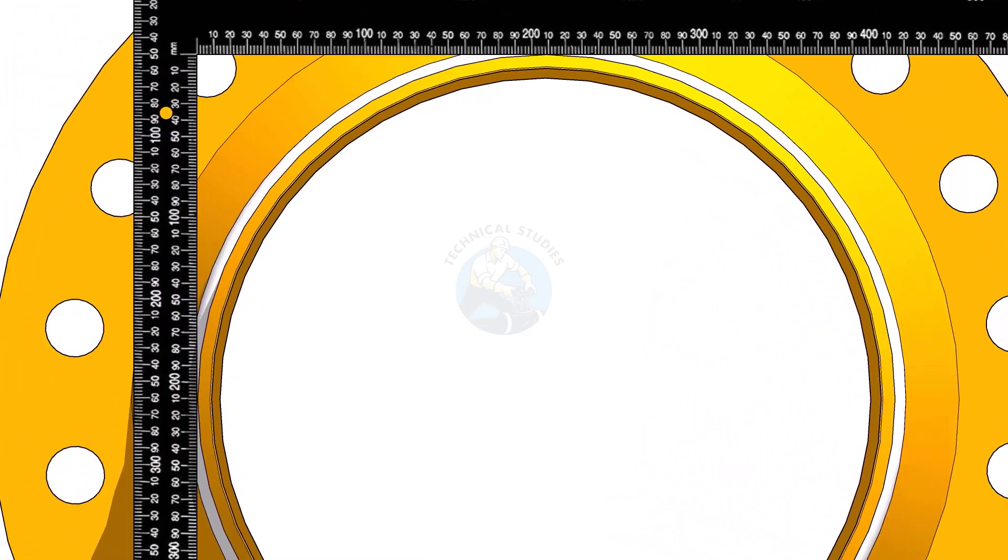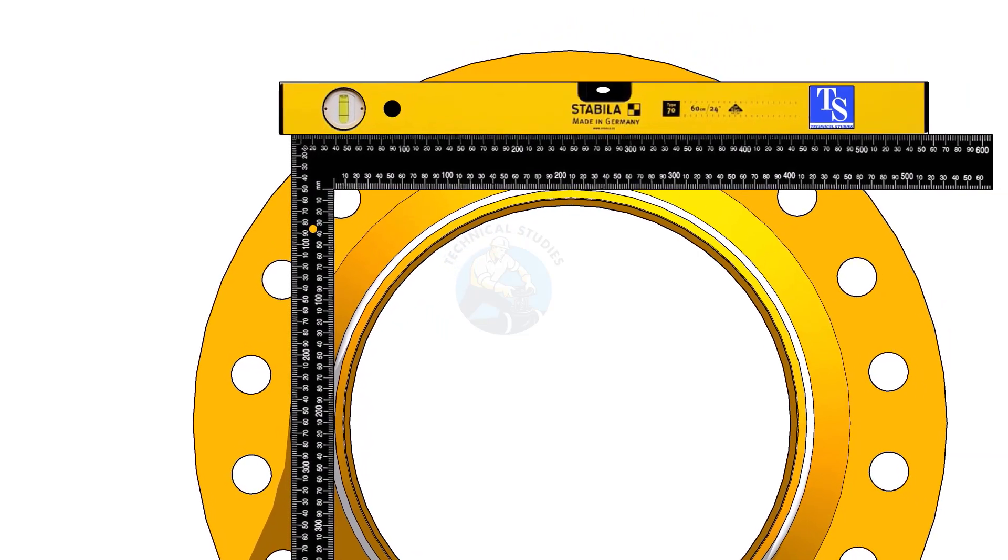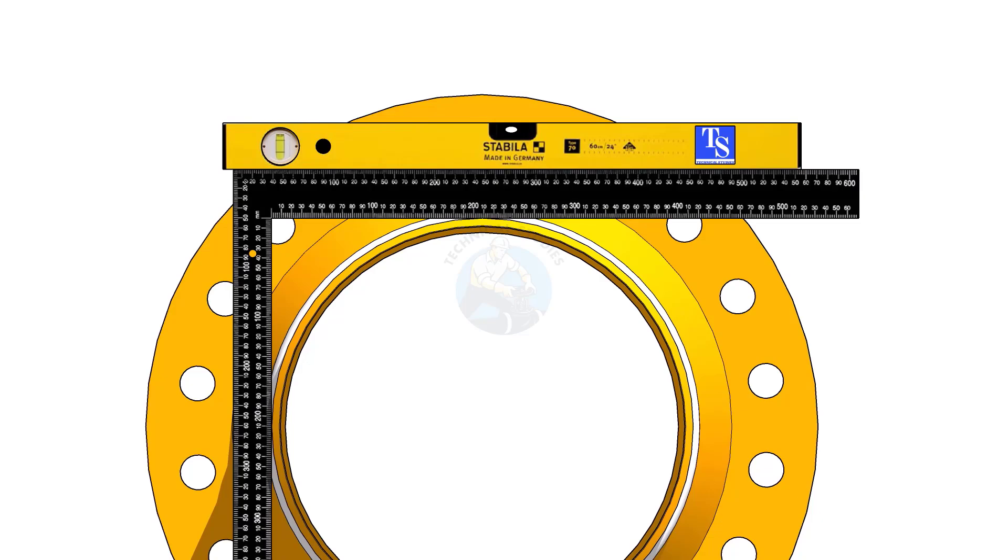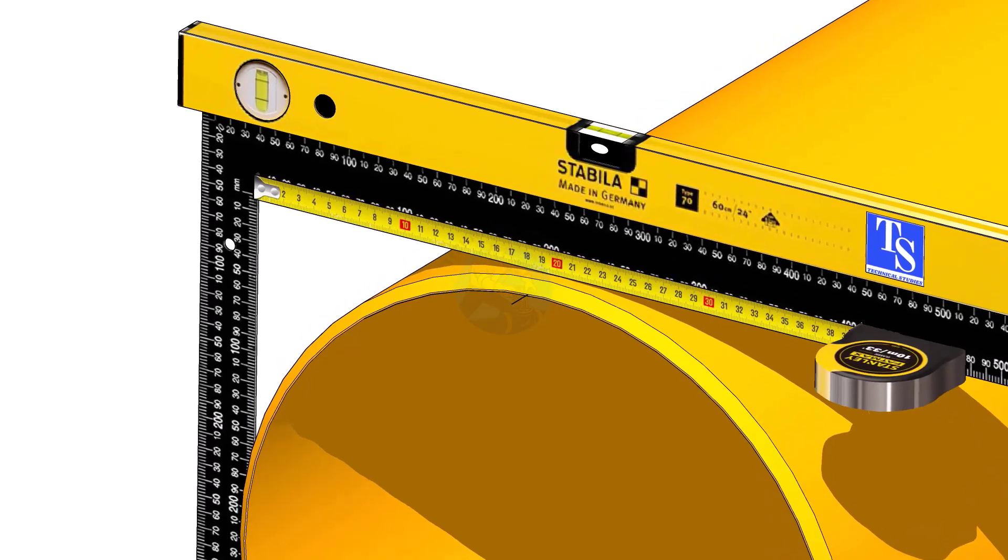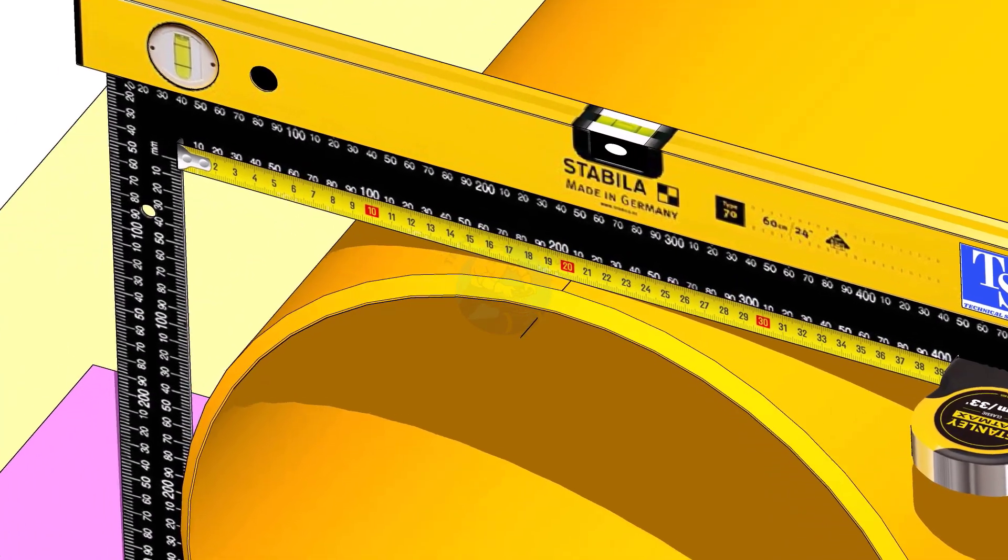Hold a large right angle on the pipe as shown. Put a spirit level on the right angle and correct the top level. Mark half OD of the pipe on the top side. Here, the half OD is 203 millimeters.